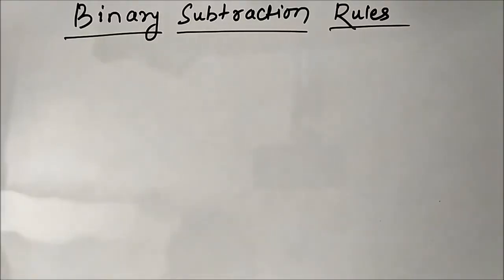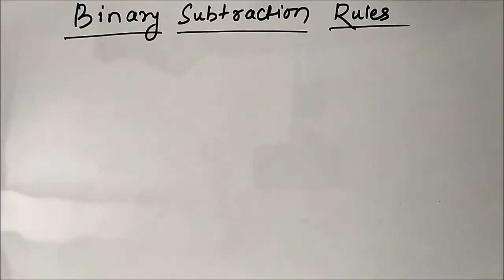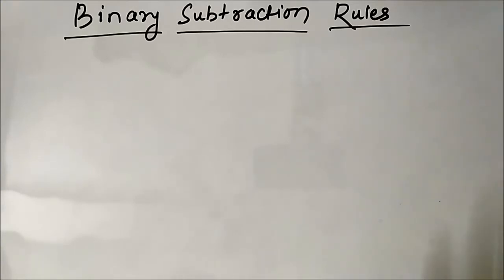Hello friends, welcome to Engineering Tutorial. In today's video we are going to discuss binary subtraction, or the subtraction of two numbers in base 2 or binary form. In my previous video we discussed binary addition, so in today's video we will discuss binary subtraction. First we will discuss the basic rules associated with subtraction of two binary digits. We know that only two symbols, two bits, are allowed in binary number system: 0 and 1.